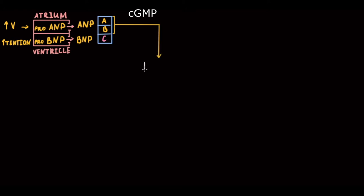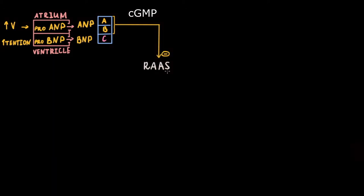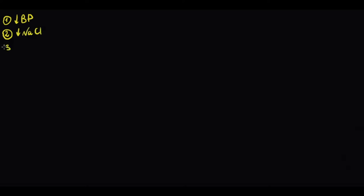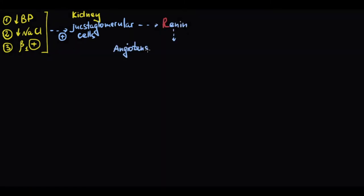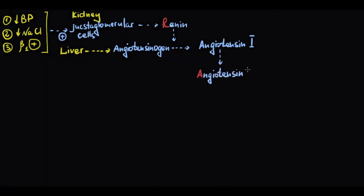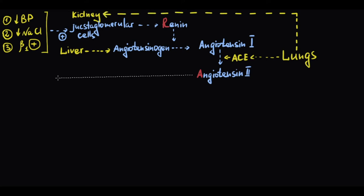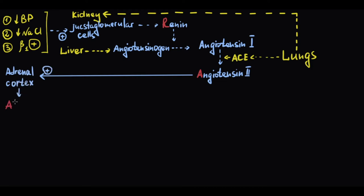Natriuretic peptides cause renin-angiotensin-aldosterone system (RAAS) inhibition. As a reminder: low blood pressure, low salt level in the distal tubule, and beta-adrenergic stimulation activate juxtaglomerular cells in the kidney, causing them to secrete renin into the blood. Renin cleaves angiotensinogen to angiotensin-1, which is physiologically inactive. Angiotensin-1 is then converted to angiotensin-2 by angiotensin-converting enzyme (ACE). Angiotensin-2 acts on the adrenal cortex to stimulate the release of aldosterone.